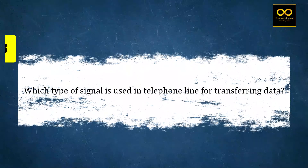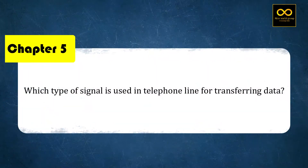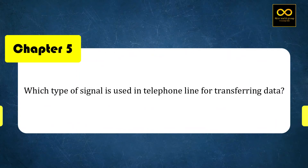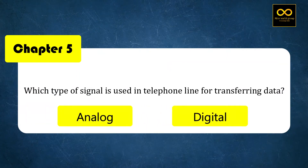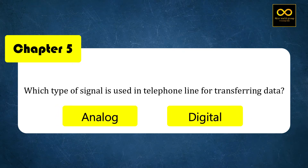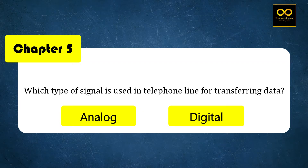Which type of signal is used in a telephone line for transferring data? The anonymous signal — that means the signal called analog signal. The right answer is option A: analog signal.